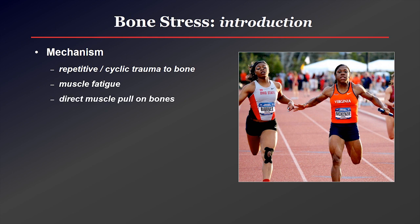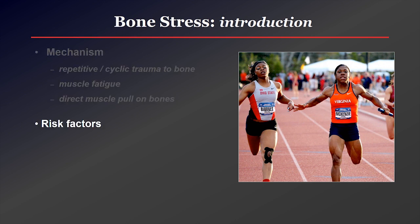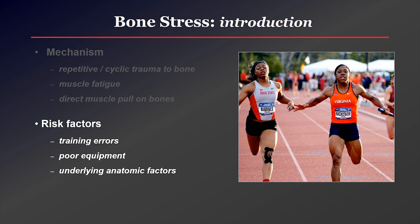In some stress fractures, the concept of direct muscle pull on the bones, resulting in repetitive deformity, also increases risk. In terms of risk factors, a runner who tries to increase their mileage too quickly, or someone who starts an exercise program too aggressively, can end up with stress injury. Poor equipment, especially footwear, can play a role, as well as underlying anatomic factors such as malalignment.